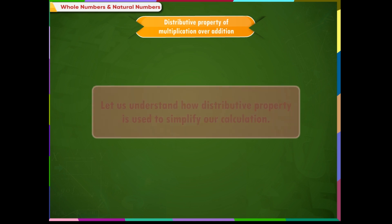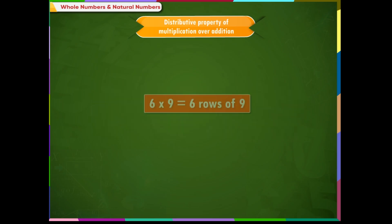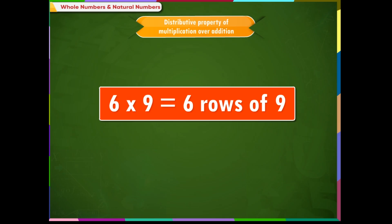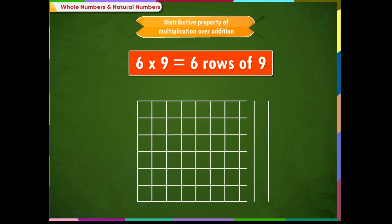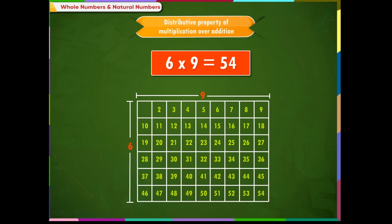Distributive property of multiplication over addition: Let us understand how distributive property is used to simplify our calculation. We know that 6 multiplied by 9 means 6 rows of 9. This grid represents an array of 6 rows of 9. We find the product by counting the number of boxes in the grid — there are 54 boxes, therefore 6 multiplied by 9 equals 54.